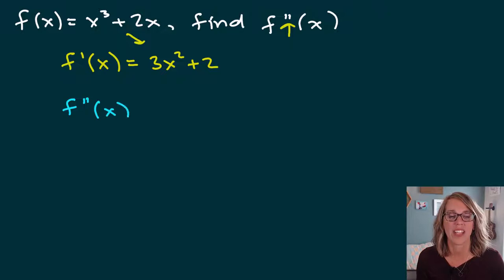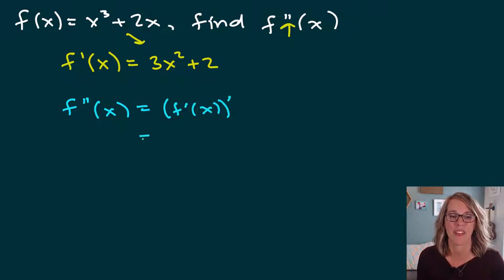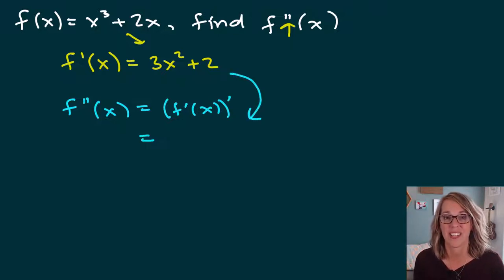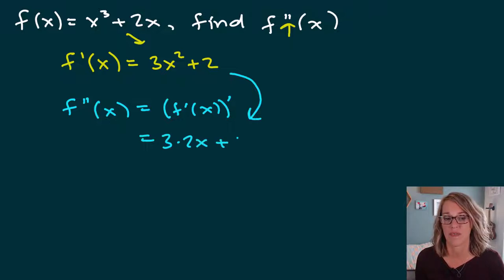What I'm doing is just taking the derivative of what I found prior. So f of x prime — I need to find the derivative of that previous value, 3x squared. The 2 comes out in front, so I get 3 times 2x plus 0, which is equal to 6x.